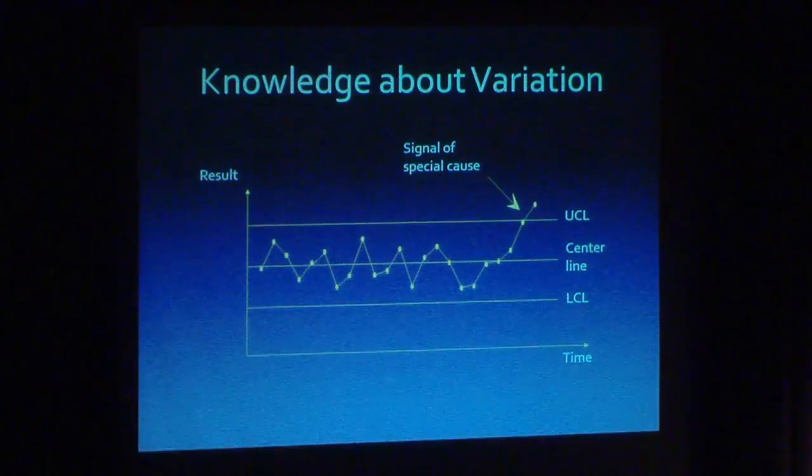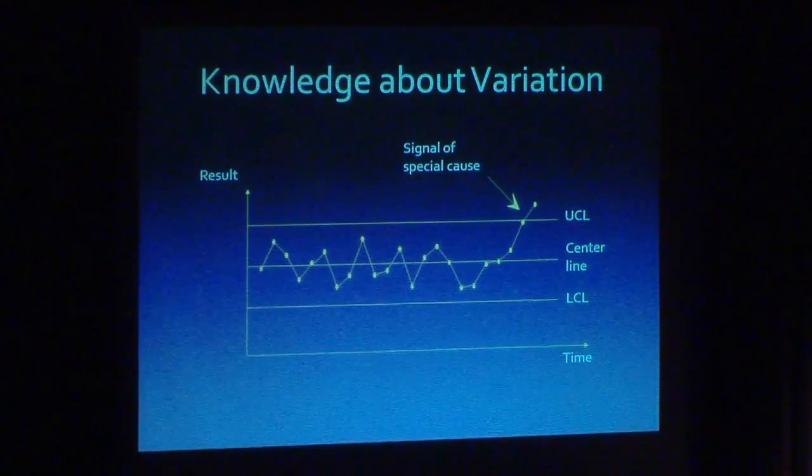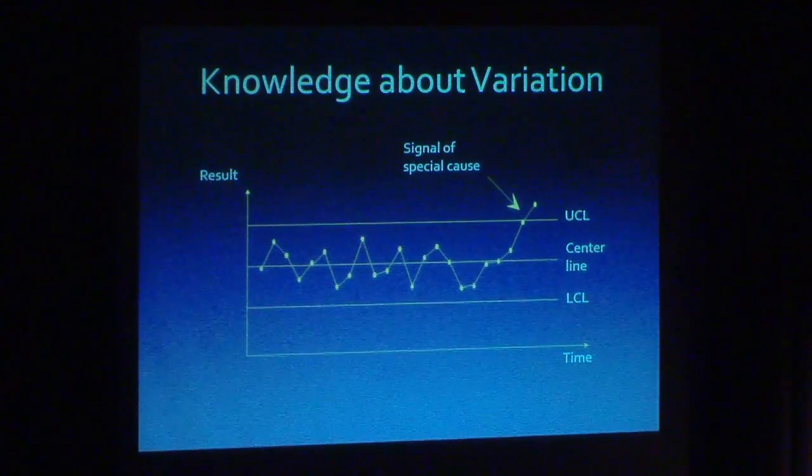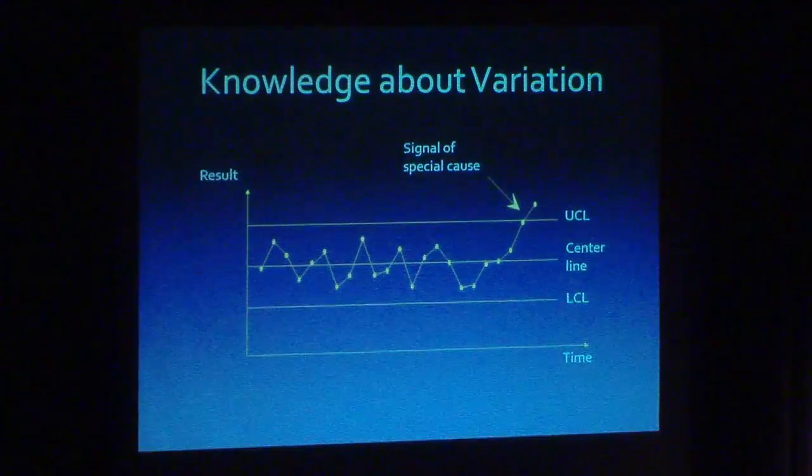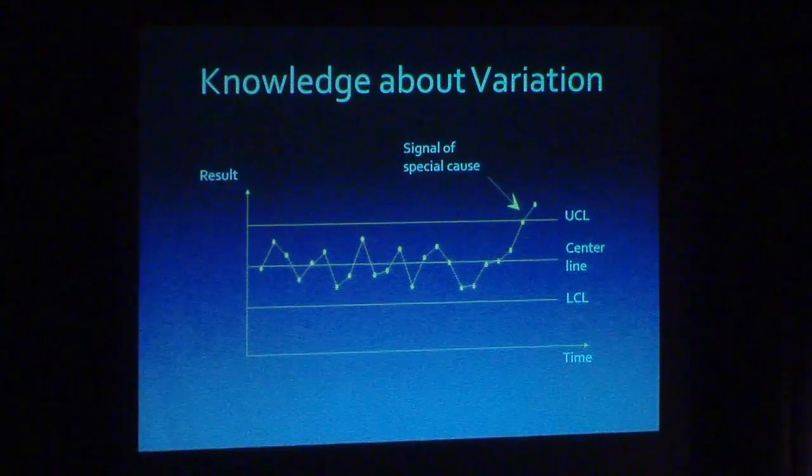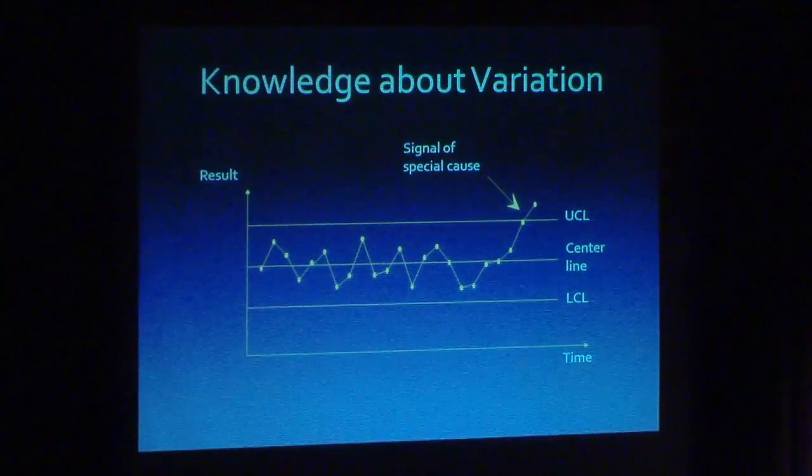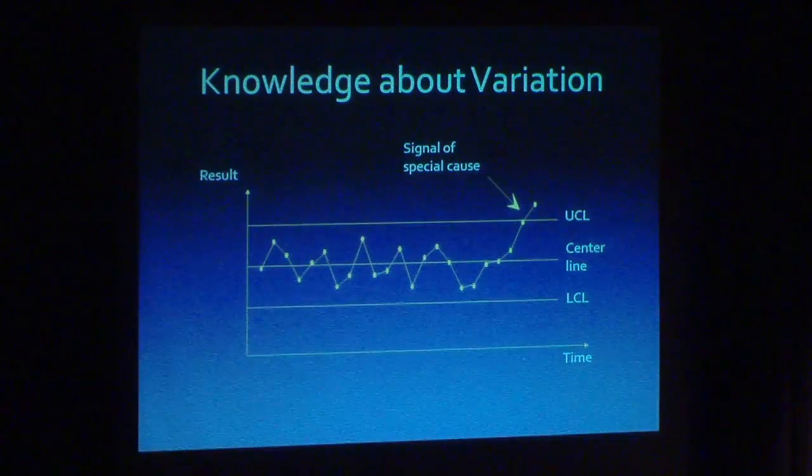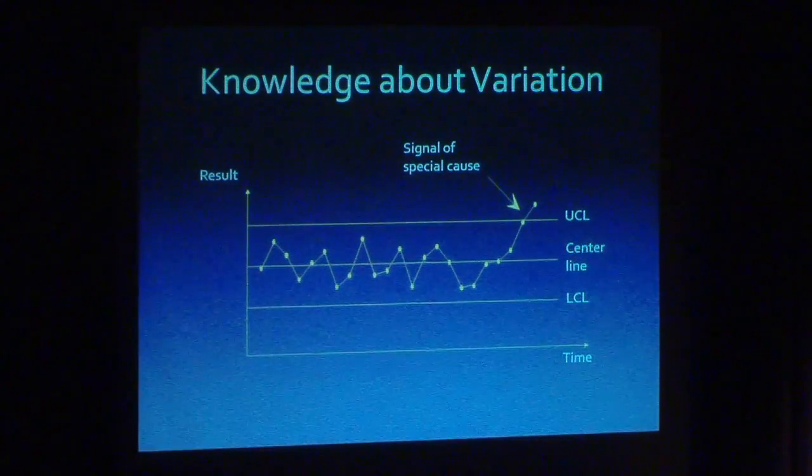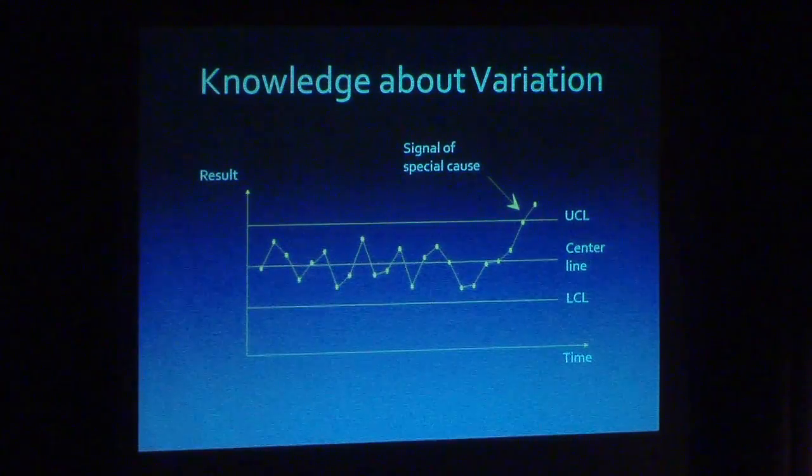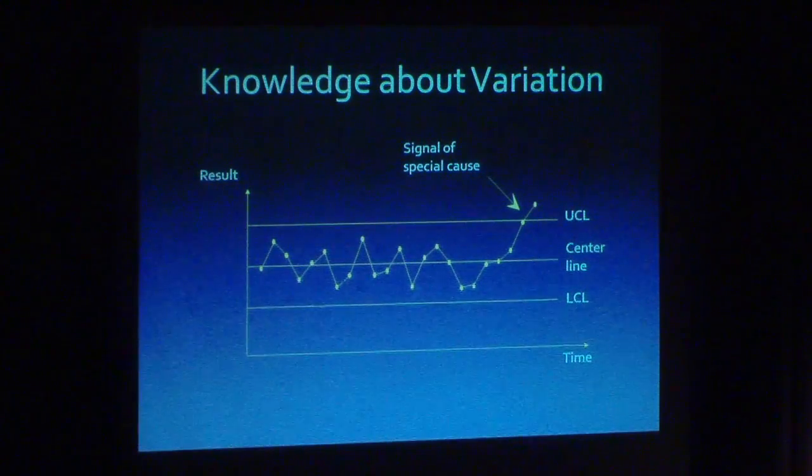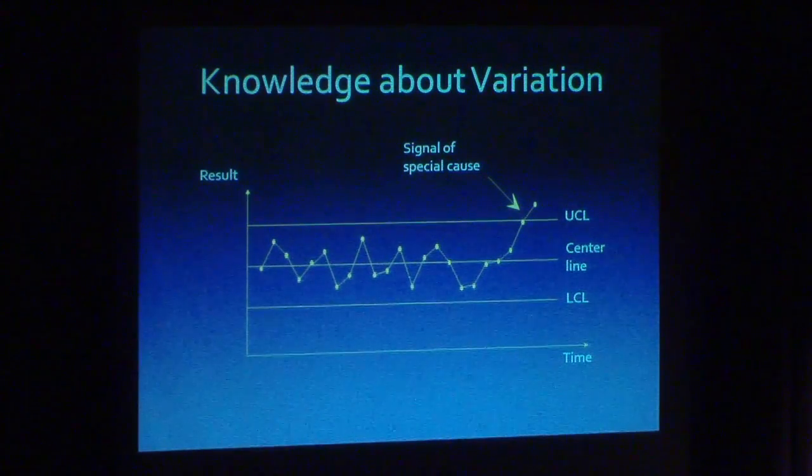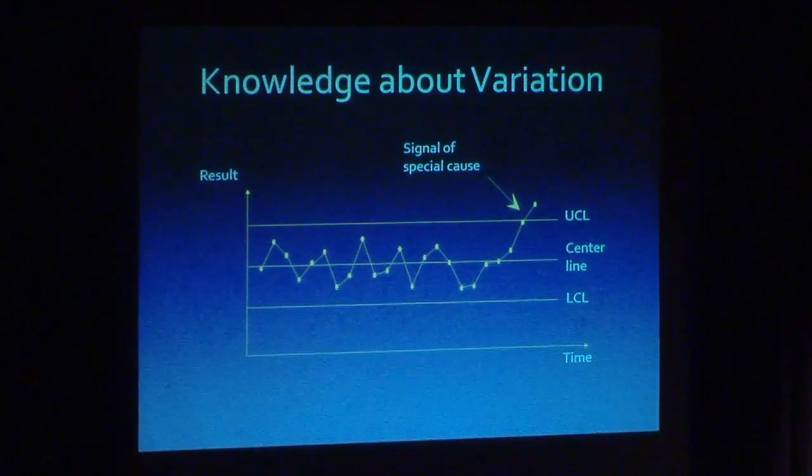These limits come from the nature of variation that's inherent in the data. What we're aiming to do here is try and determine when it makes sense to ask the question, 'What was special? What was different? What's going on?' versus saying, 'Hey, this is just variation.' That's what the statistical control limits do for you - they give you that ability to know when it makes sense to ask that question.